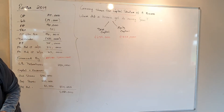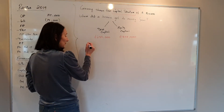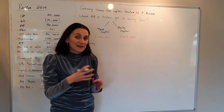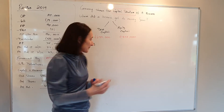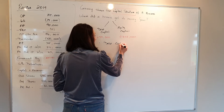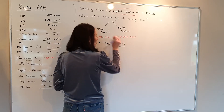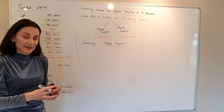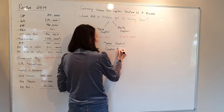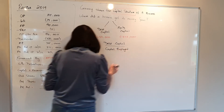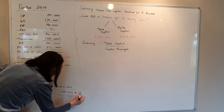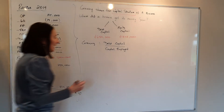When you want to do gearing in part B, the gearing formula is your debt capital over the total amount of money invested in your business. The total amount of money invested is called capital employed, and this final figure in your balance sheet is capital employed (CE). You want it expressed as a percentage.